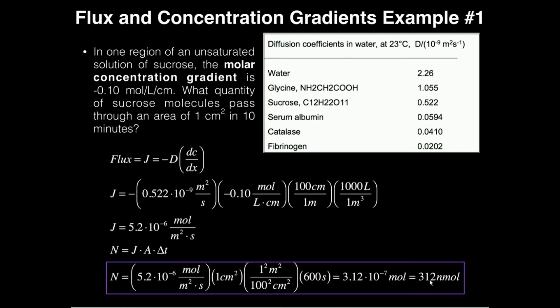So that's the number of moles that cross that area per unit time given the flux that we calculated. If I wanted to calculate from here, the absolute number of molecules, I would just take this moles right here and multiply by Avogadro's number. So take 3.12 times 10 to the minus seventh times 6.02 times 10 to the 23rd molecules per mole. And that would give you the number of molecules.